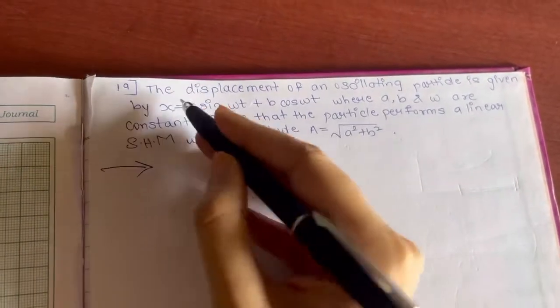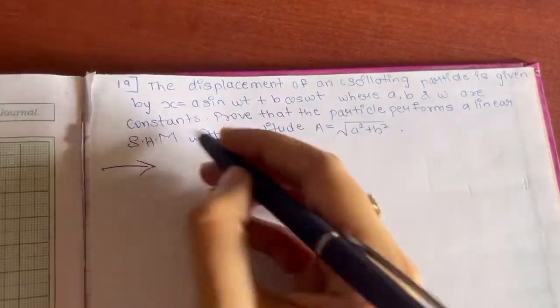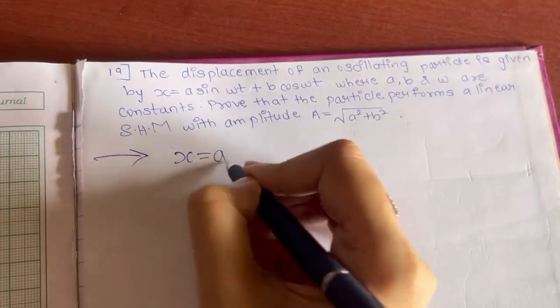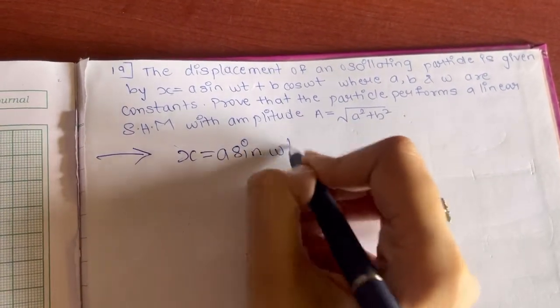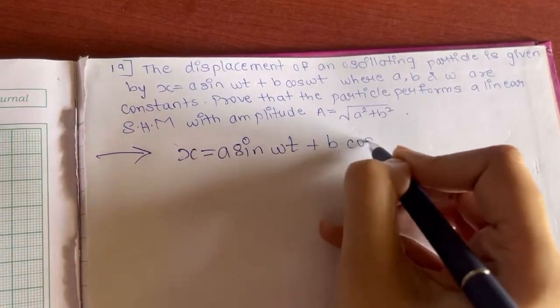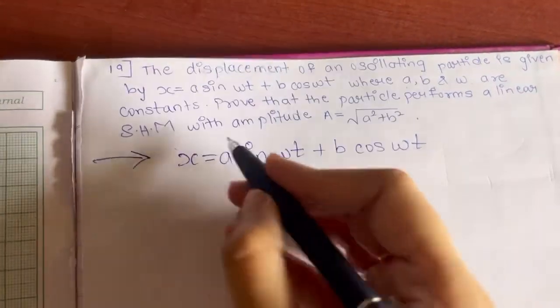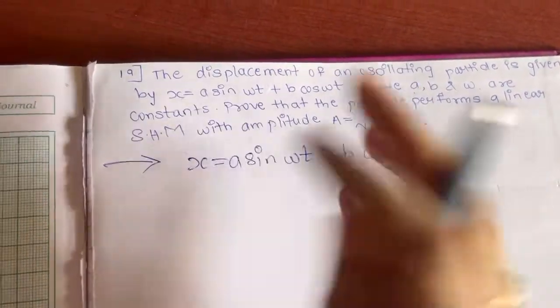Starting with numerical number 19, the displacement of an oscillating particle is given by the equation x = a sin ωt + b cos ωt, where a, b, and ω are constants.